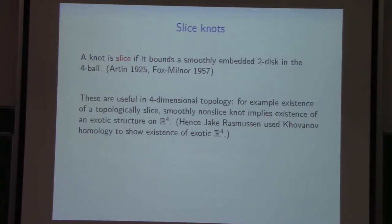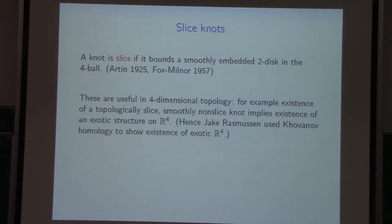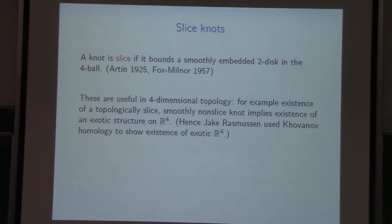A different use: existence of a topologically slice but smoothly non-slice knot implies existence of an exotic R⁴. I'm working in the smooth category — interested in smoothly embedded disks. Due to Freedman's theorem, any knot with Alexander polynomial one is topologically slice. If you can show such a knot is not smoothly slice, there's a construction giving you an exotic R⁴. This was used about ten years ago by Jake Rasmussen, combining Freedman's theorem with Khovanov homology and Jake's s-invariant, to show existence of exotic R⁴ without any gauge theory.